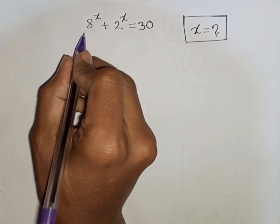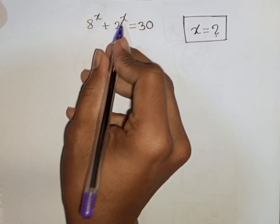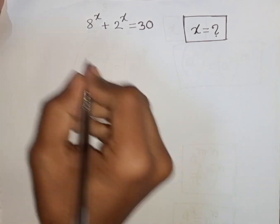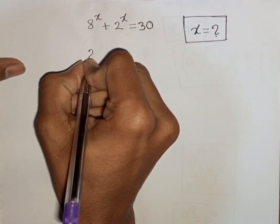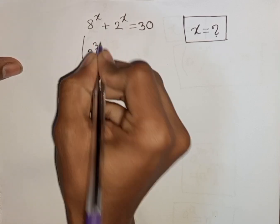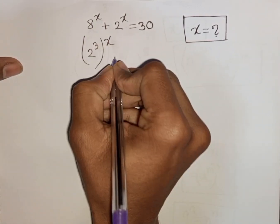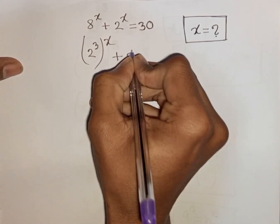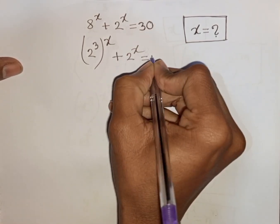How to solve 8 power x plus 2 power x is equal to 30. Find the value of x. We have 8 power x, same as 2 power 3, bracket power of x, plus 2 power x is equal to 30.